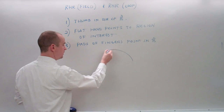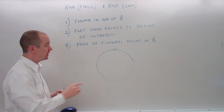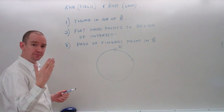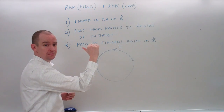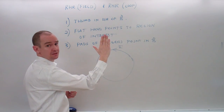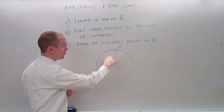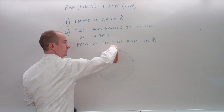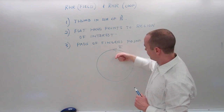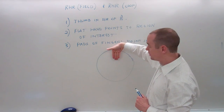Imagine I have a current-carrying loop of wire. What is the direction of the magnetic field in the center of this loop? I point my thumb in the direction of the current, make my hand flat. My hand isn't pointing to the region of interest yet — I care about what's in the center. So I turn my hand until it points towards the center. The pads of my fingers are pointing out of the board, so the magnetic field in the center of this loop must be out of the board.